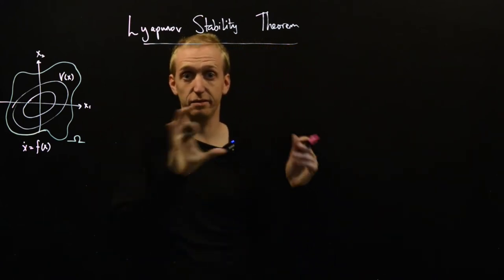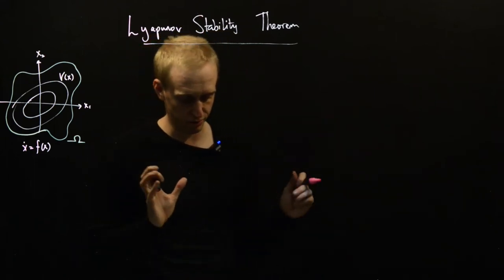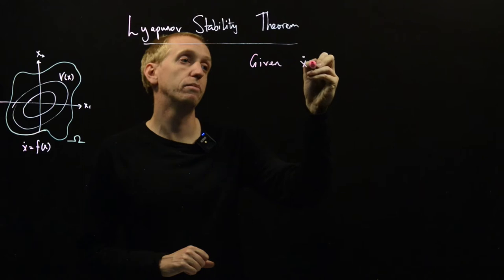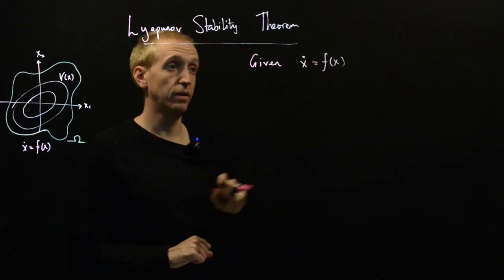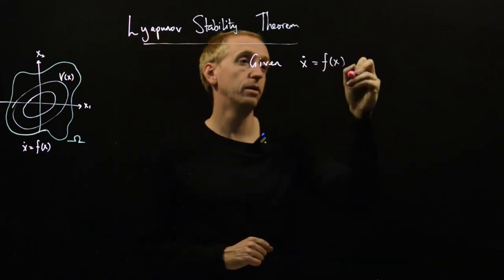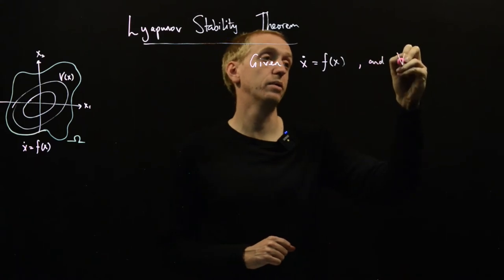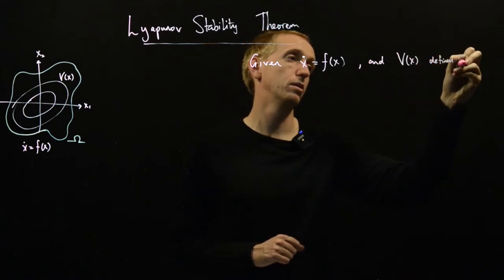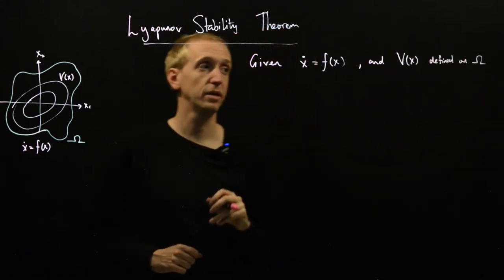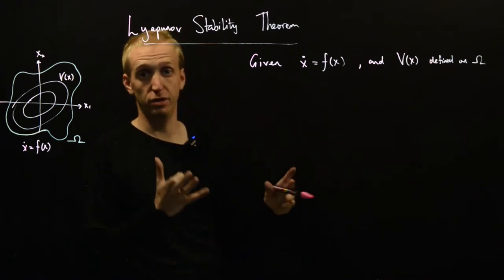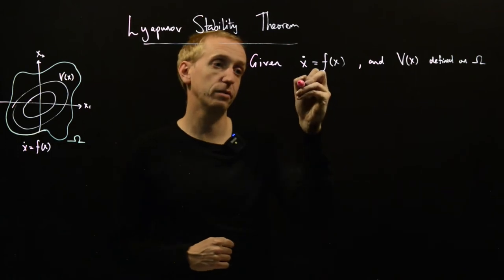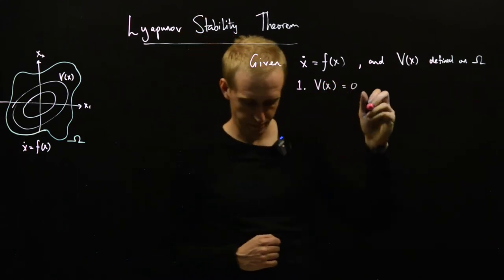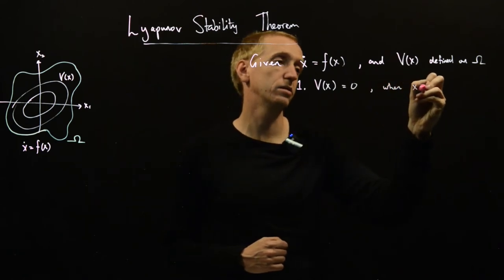And what the Lyapunov stability results are going to do is they're going to let us talk about stability on these regions omega, and we'll consider some different ones. So what are the set of Lyapunov stability theorems? Well, I'll just start to write them out. And so what we're going to be dealing with is we're given some nonlinear system x dot is equal to f of x.